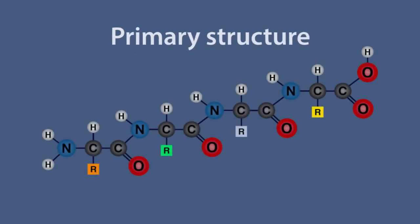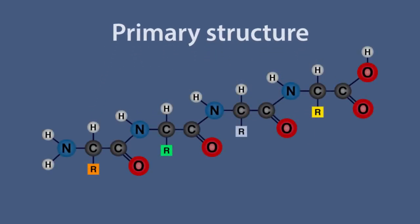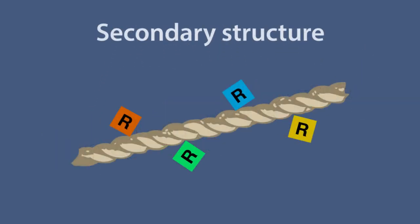Enzymes have a primary structure, which is simply the polypeptide chain we have just seen. The secondary structure enables the protein to coil up like a twisted rope.